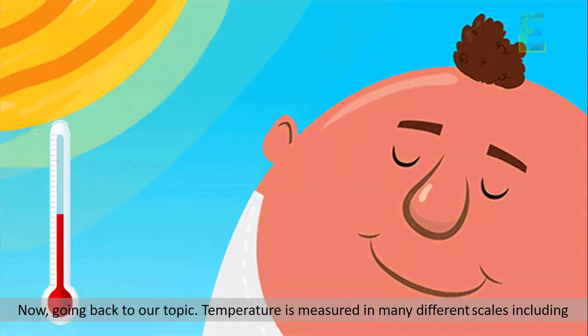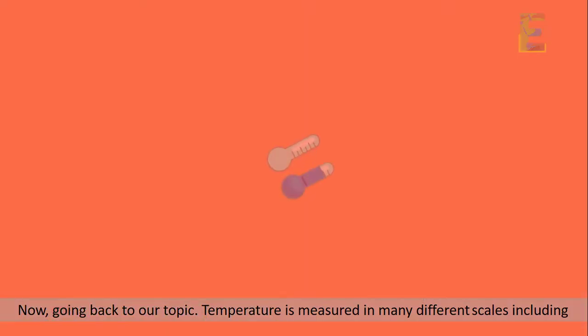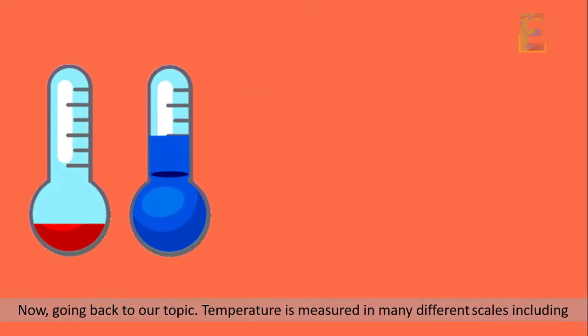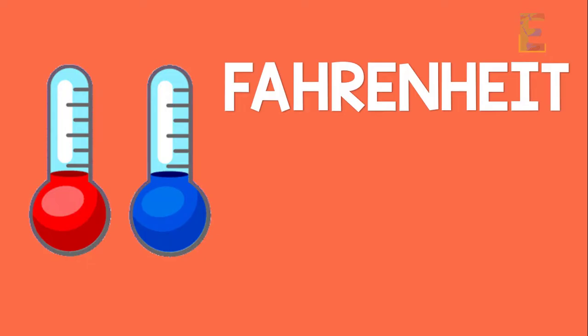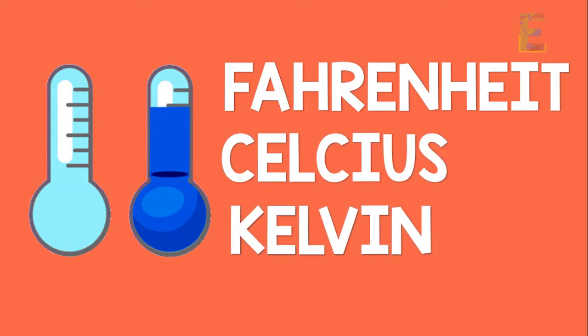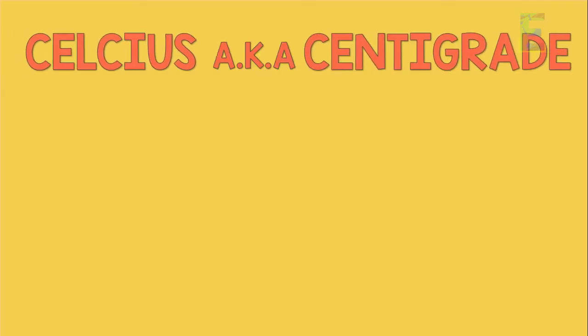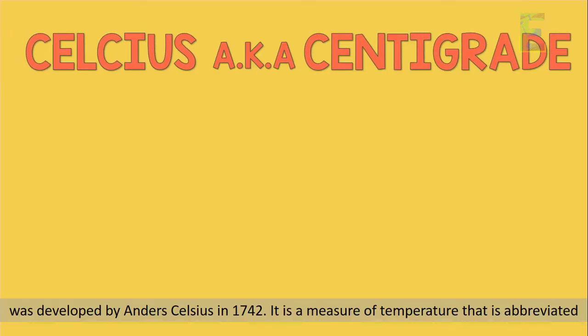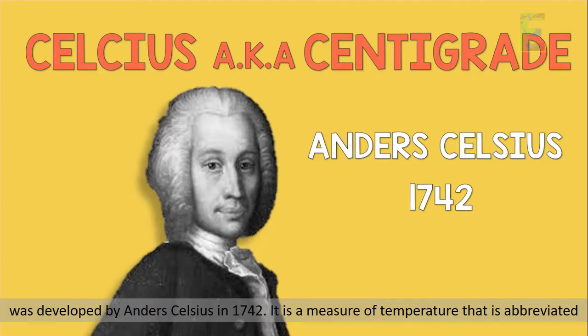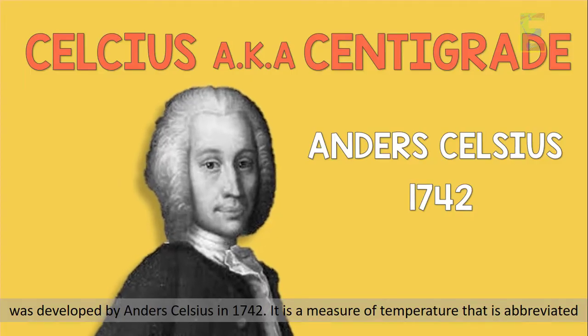Now going back to our topic, temperature is measured in many different scales including Fahrenheit, Celsius and Kelvin. Let us tackle them one by one. Celsius, also known as centigrade, was developed by Anders Celsius in 1742. It is a measure of temperature that is abbreviated by C.